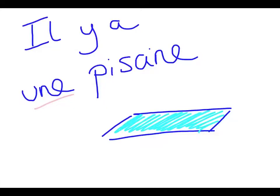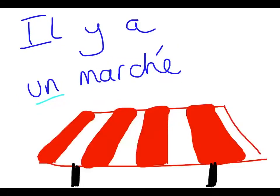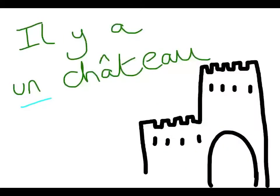Let's look at some examples first with il y a. Il y a une piscine — there is a swimming pool. Il y a un marché — there is a market. Il y a un château — there is a castle.